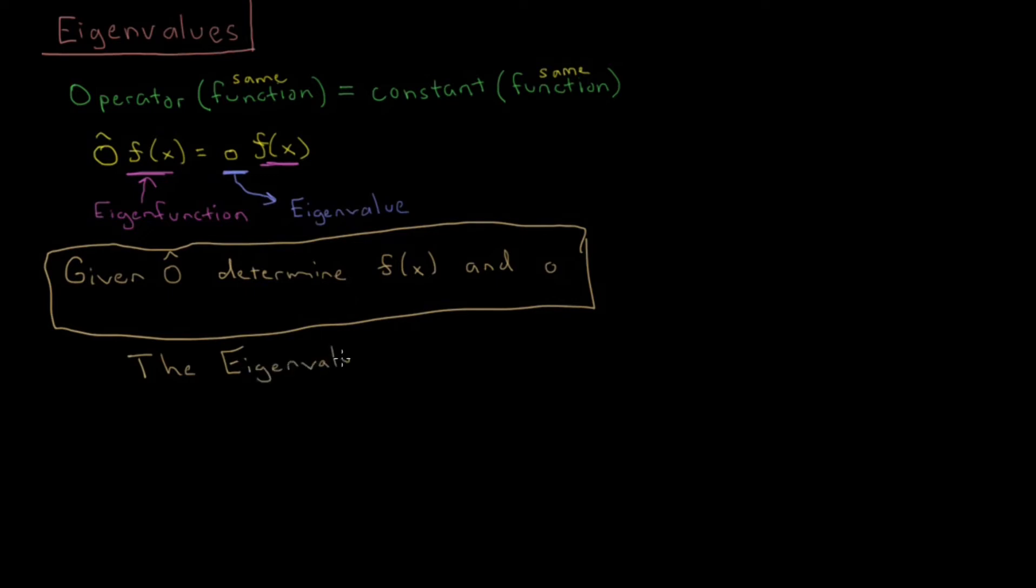Okay, so by this point you're probably saying, well, I'm all eigened out. What the heck is going on with these eigen things? So, this is important because the Schrödinger equation can be formulated as an eigenvalue problem.